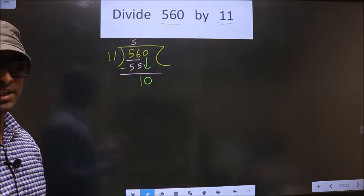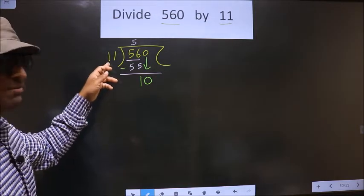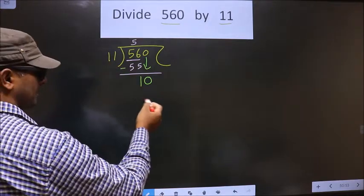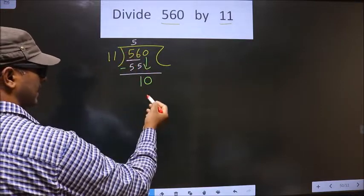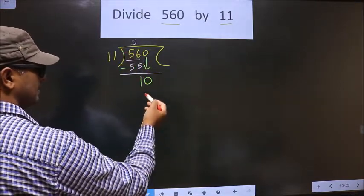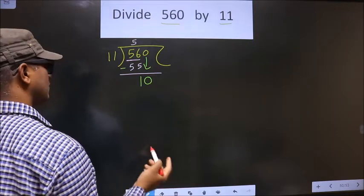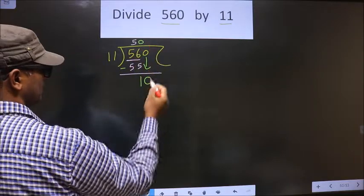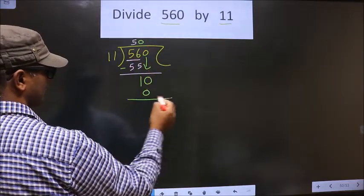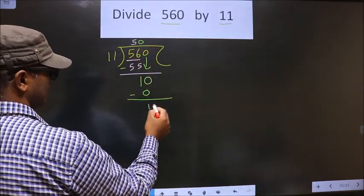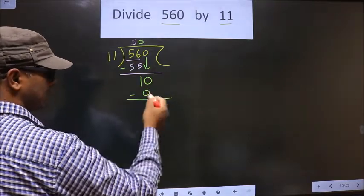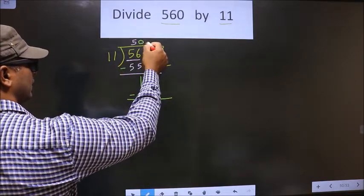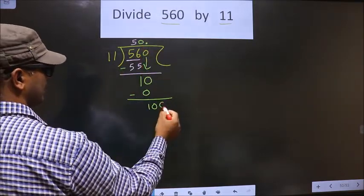Instead, what you should think is: what should you multiply to this number to get a number here? If I multiply by 1, I get 11, but 11 is larger than 10. So we multiply by 0 — 11 into 0 is 0. Now you subtract, you get 10. Here we did not bring any number down. Now 10 is smaller than 11, so here you can put a dot and take 0.